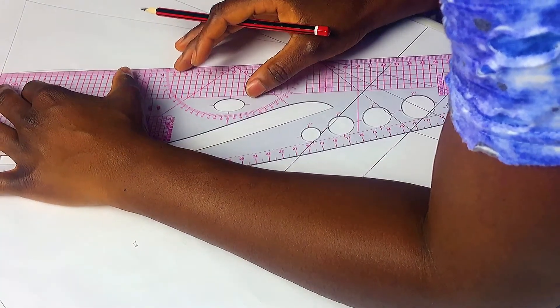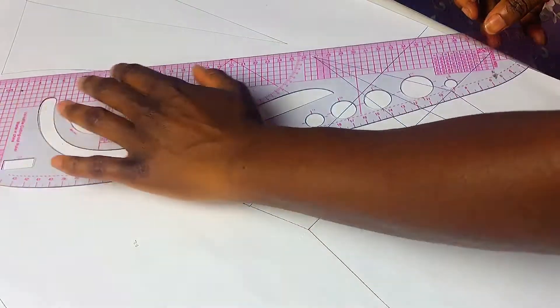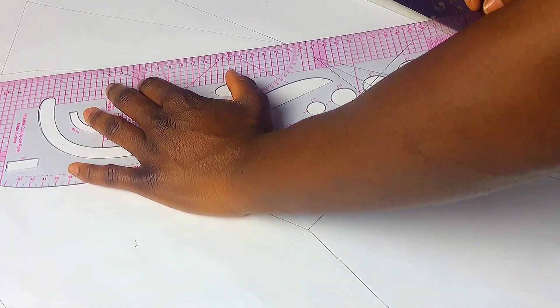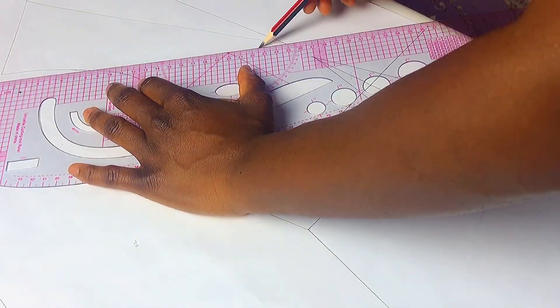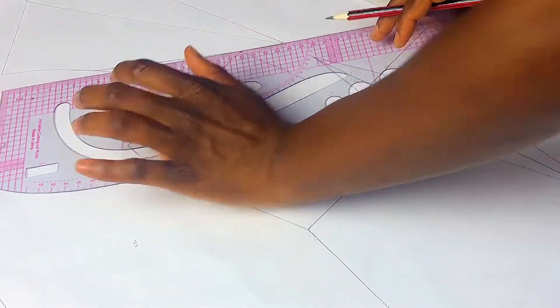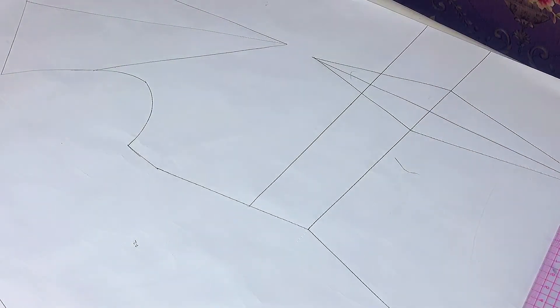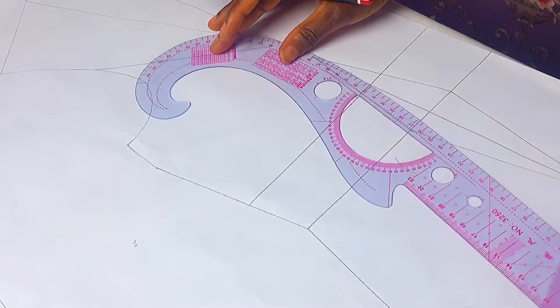Then I measured about 8 cm down from my shoulder point and I ruled from the marked point to my underbust or point D. Please note that I'll be using both bust point and point D interchangeably, they mean the same thing.